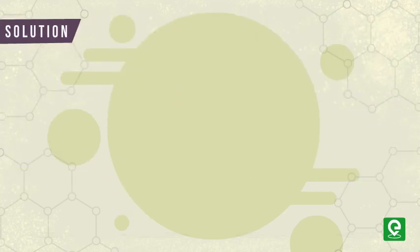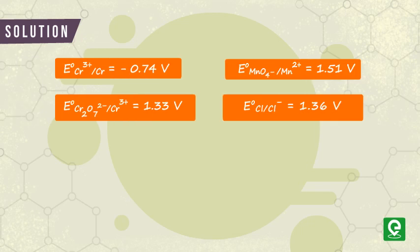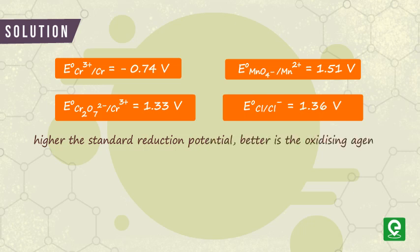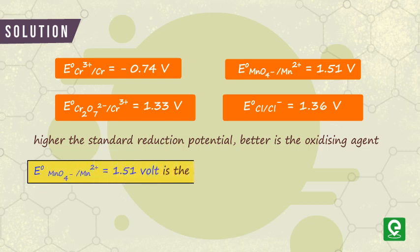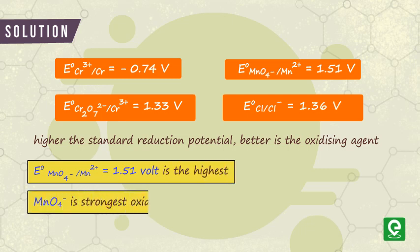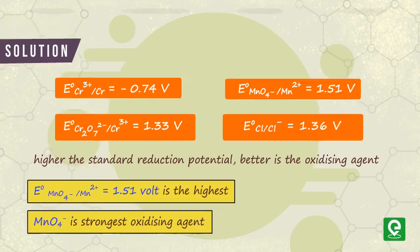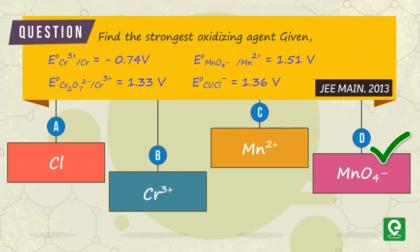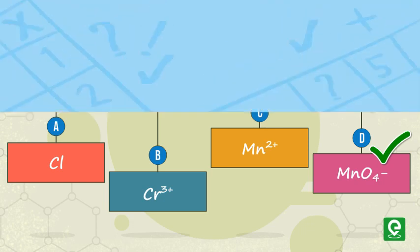Solution: In the question, we are given the values of E° for all four electrolytic reactions. As per the characteristic learned earlier, we know that higher the standard reduction potential, better is the oxidizing agent. Among the given reactions, E° MnO₄⁻/Mn²⁺ = 1.51V is the highest. Hence, MnO₄⁻ is the strongest oxidizing agent. Option D is the correct answer.